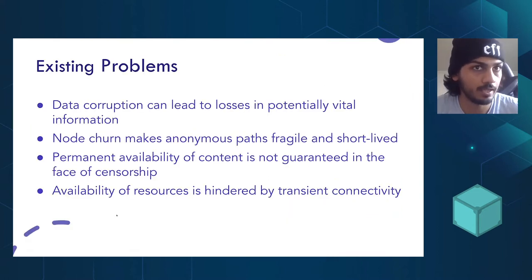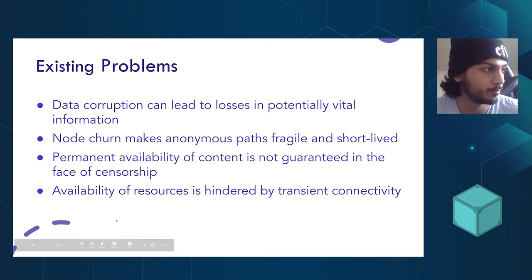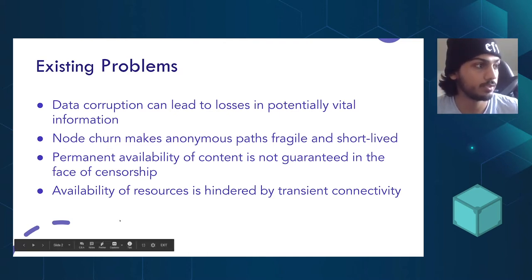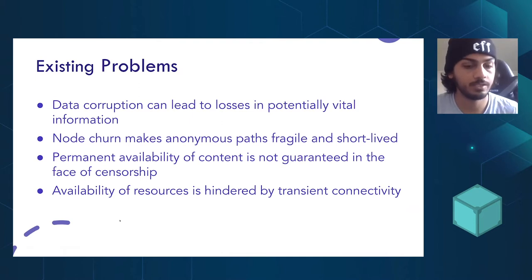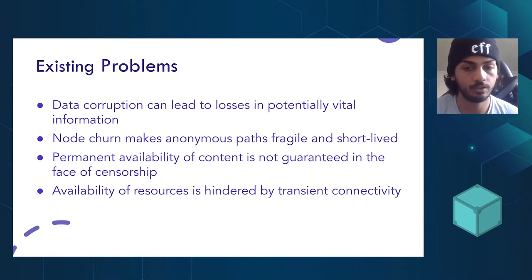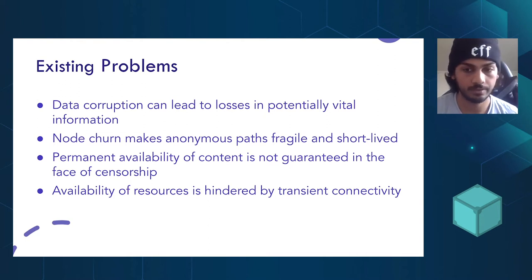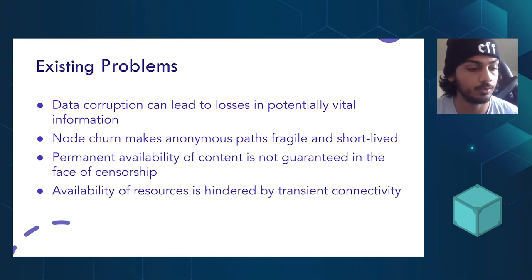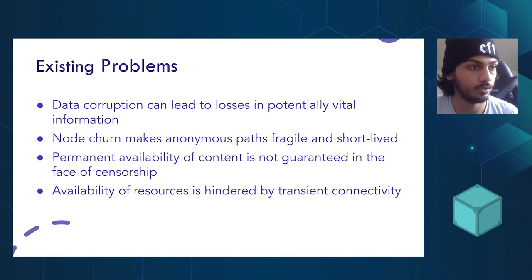What are the problems that this solves? The existing problems I wanted to tackle: data corruption can lead to losses in vital information because, when you have a distributed system, you have data at storage and data in transit, and you want to ensure there is integrity of both these modes of data. Data at rest can be compromised by things like coffee poured on your laptop or a massive power grid failure. And if vital content is being served from your devices onto other devices in the network, you don't want this to happen. You want to ensure there are different ways to access the same information in your distributed system.